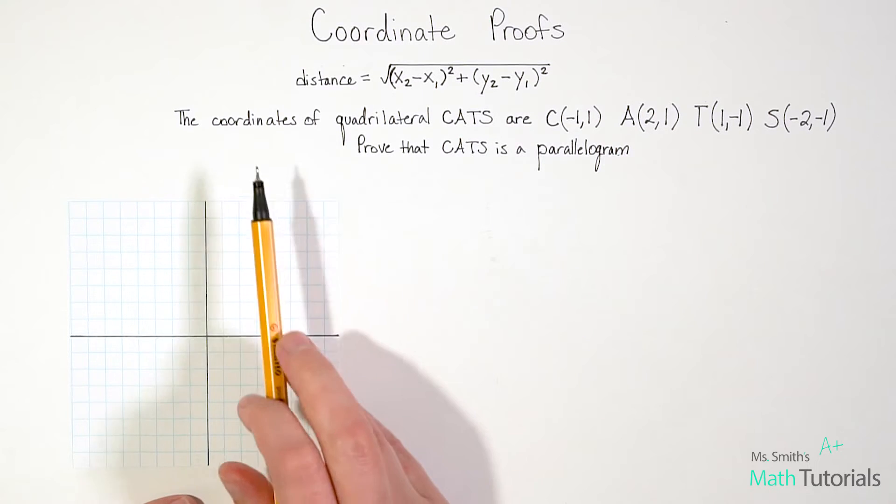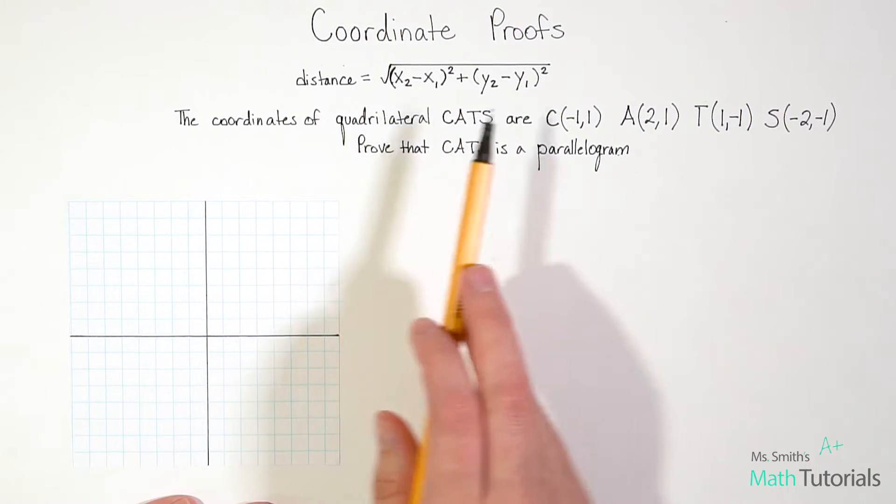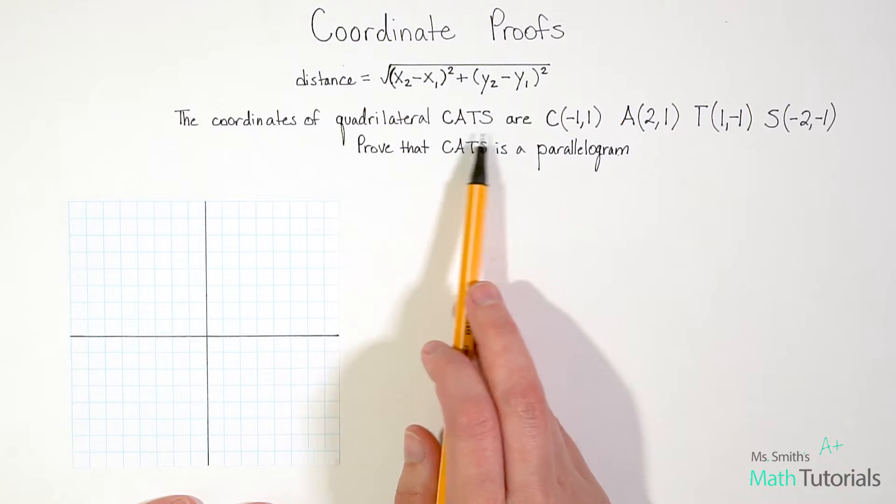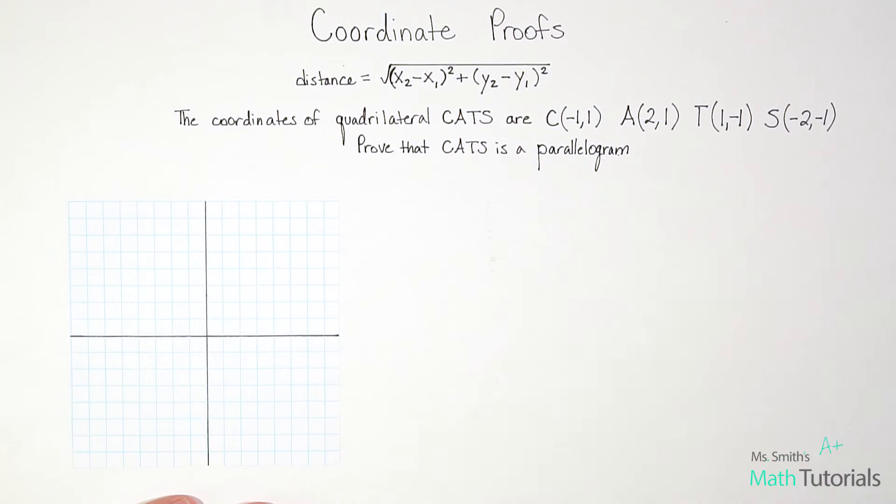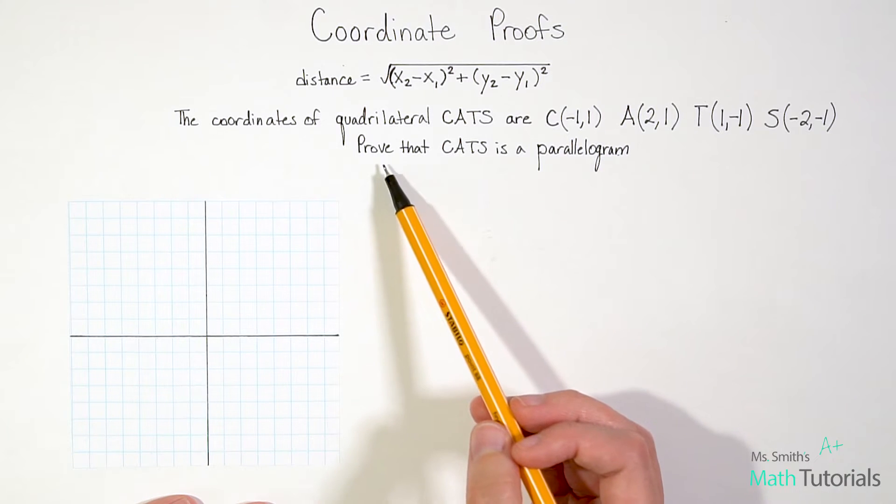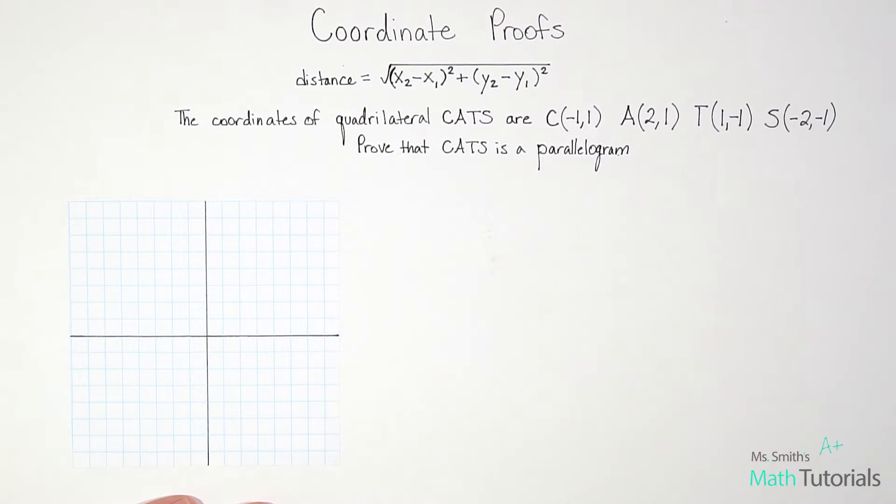In this example they've said the coordinates of quadrilateral CATS are, and they give us the different coordinate points for each letter, and they want us to prove that CATS is a parallelogram.